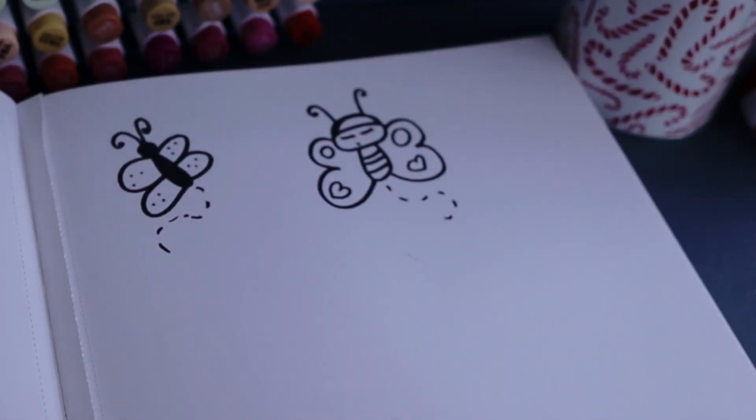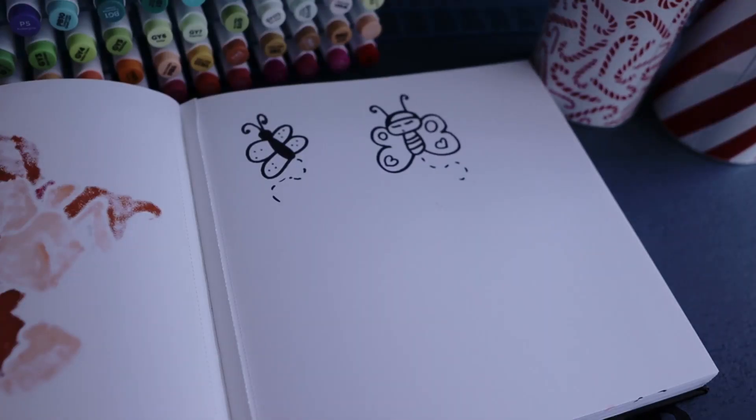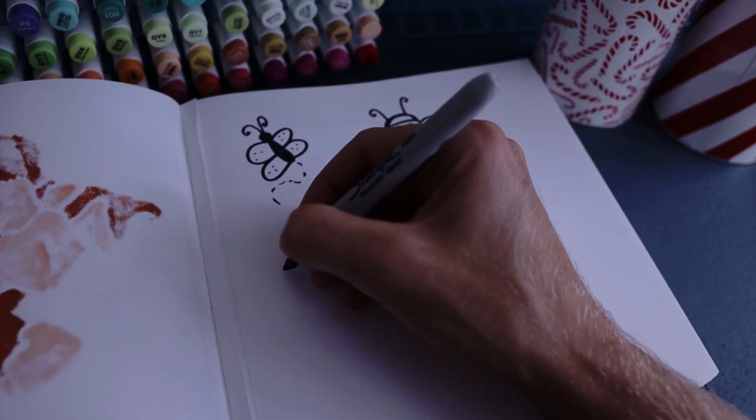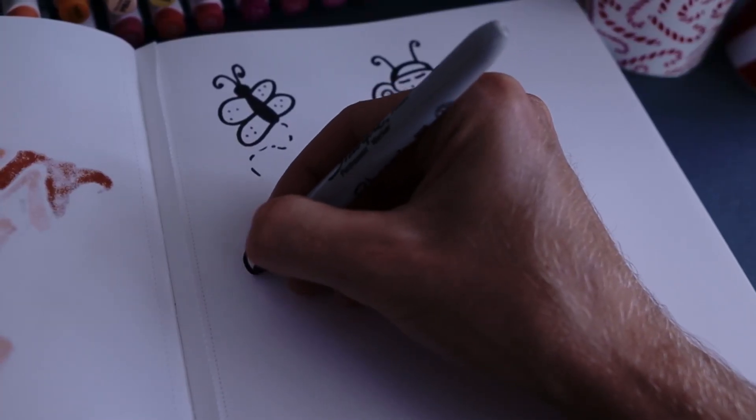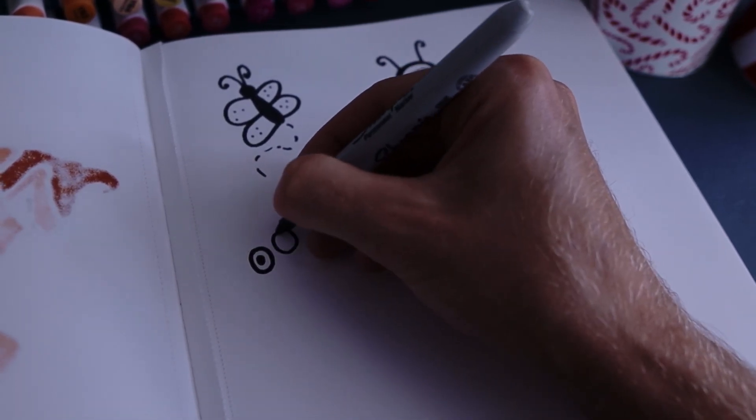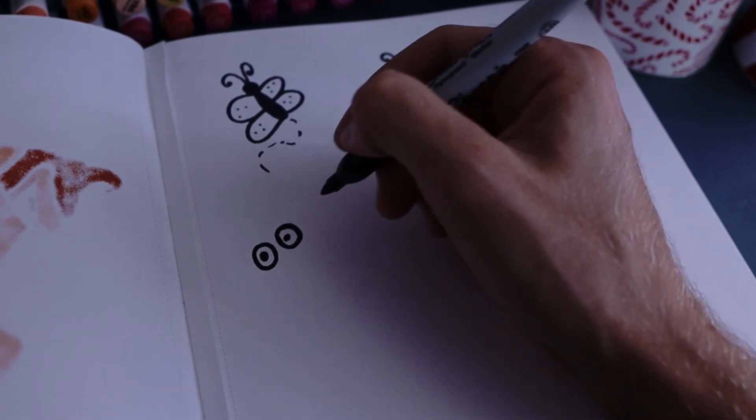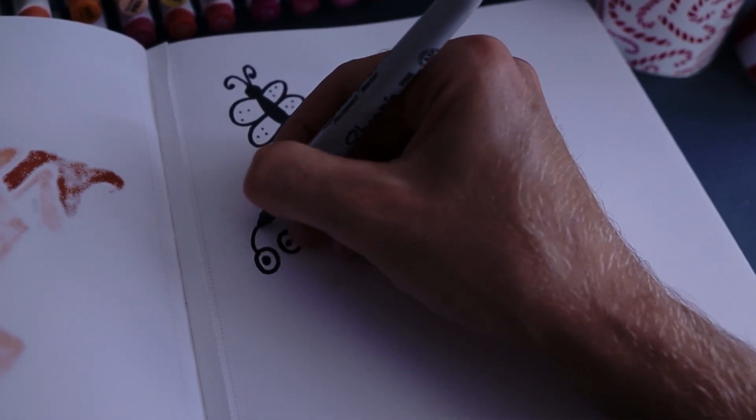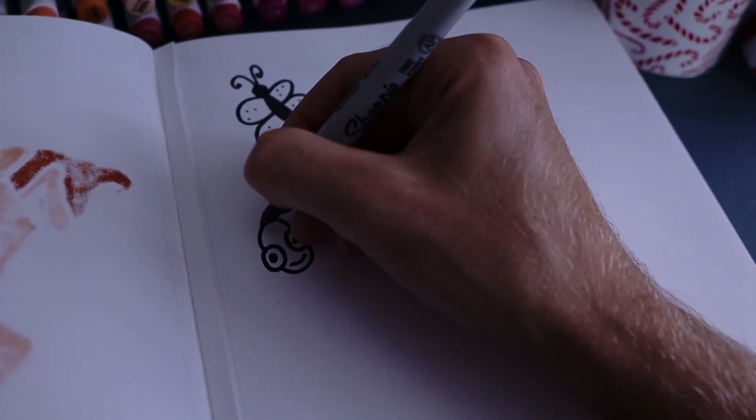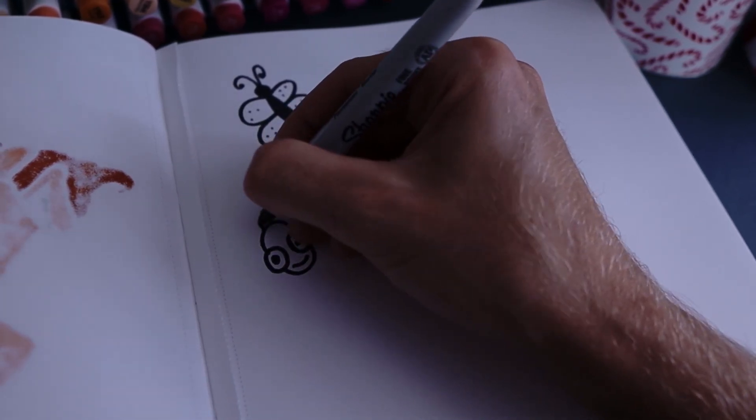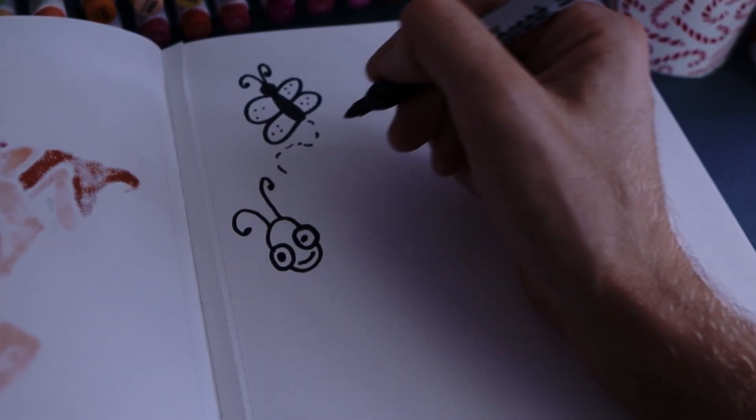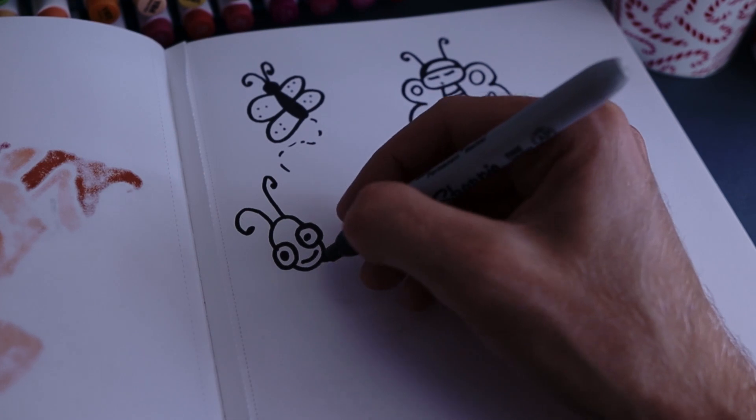Awesome. Right, so next one, let's do like a funny little looking one. So we'll do one with big eyes and pop a head up. Nice big smile, nice big smile, and then pop in the antenna. And this one I love, a nice big juicy body.